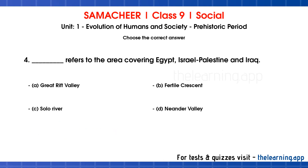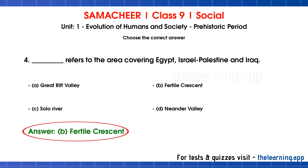Fourth question: dash refers to the area covering Egypt, Israel, Palestine, and Iraq. The options are A) Great Rift Valley, B) Fertile Crescent, C) Solo River, D) Neander Valley. The correct answer is Option B, Fertile Crescent — covering Egypt, Israel, Palestine, and Iraq.